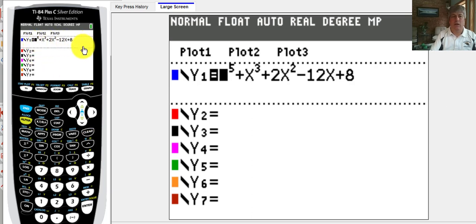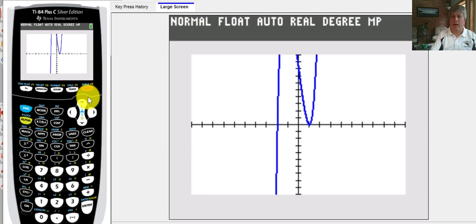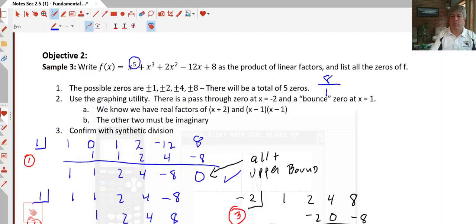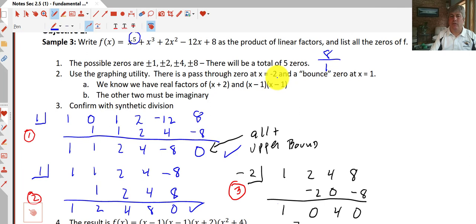So I input my function into my graphing calculator. I go ahead and graph, and I see that I have real zeros at negative 2 and 1. And at 1, we bounce, so there is a double root at 1. So that's two of our zeros. We have three of our five zeros. They're real, so the other two must be complex. So we have a pass-through zero at x equals negative 2 and a bounce zero at x equals 1. So we know our real factors are x plus 2 and two factors of x minus 1. And as I mentioned previously, the other two must be imaginary.